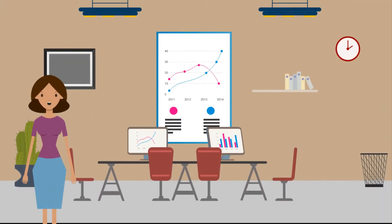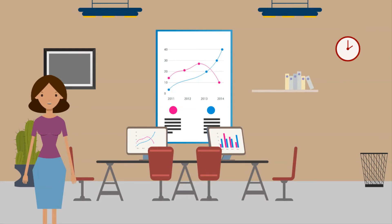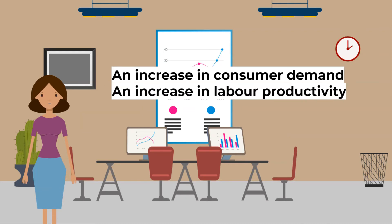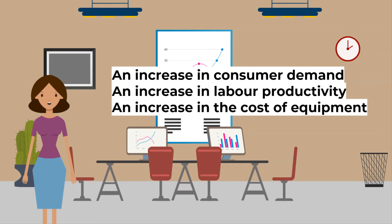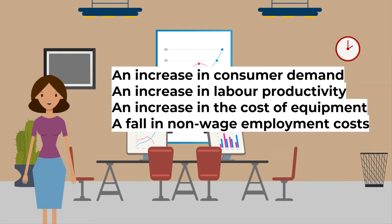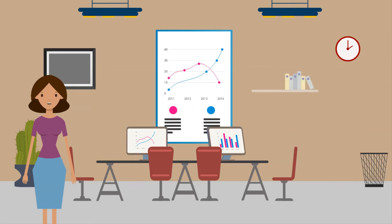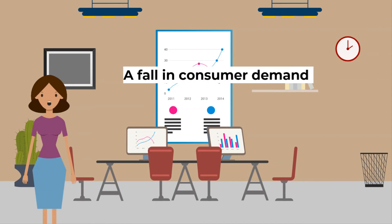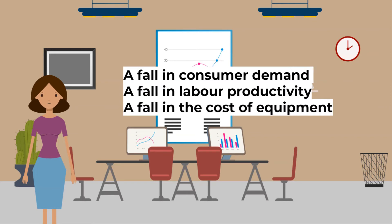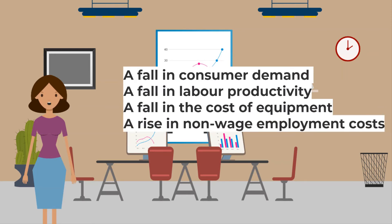Let's look more closely at the demand for labor. What causes the demand for labor to increase? An increase in consumer demand, an increase in labor productivity, an increase in the cost of equipment, or a fall in non-wage employment costs — examples are pension contributions and health and safety costs. What causes the demand for labor to fall? A fall in consumer demand, a fall in labor productivity, a fall in the cost of equipment, or a rise in non-wage employment costs.